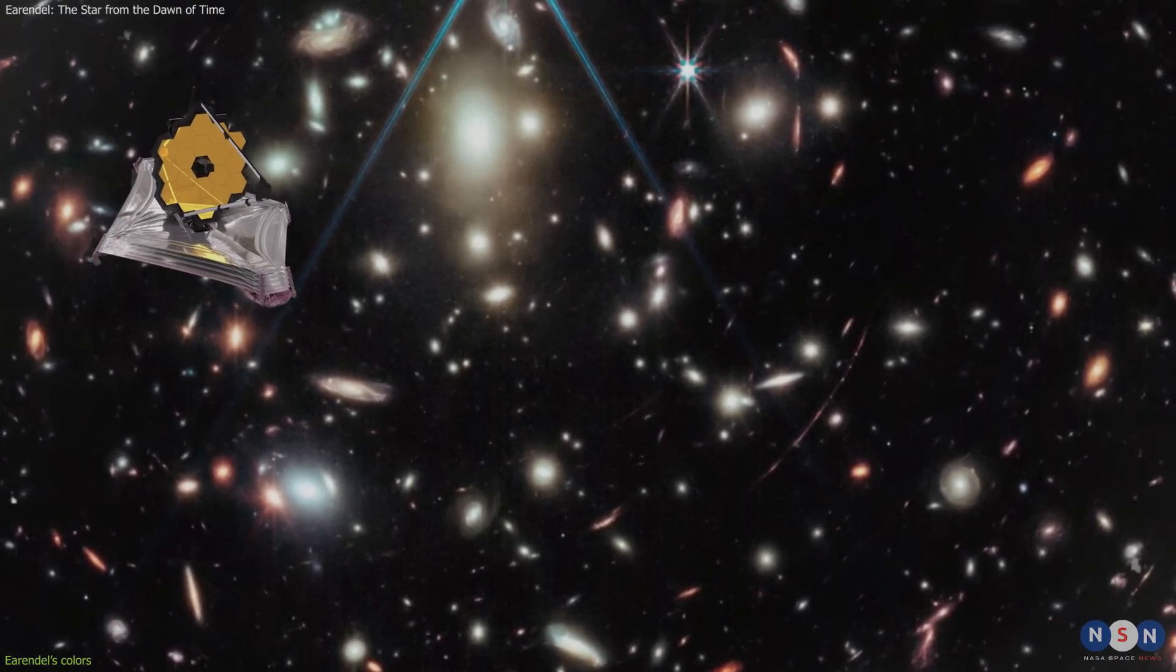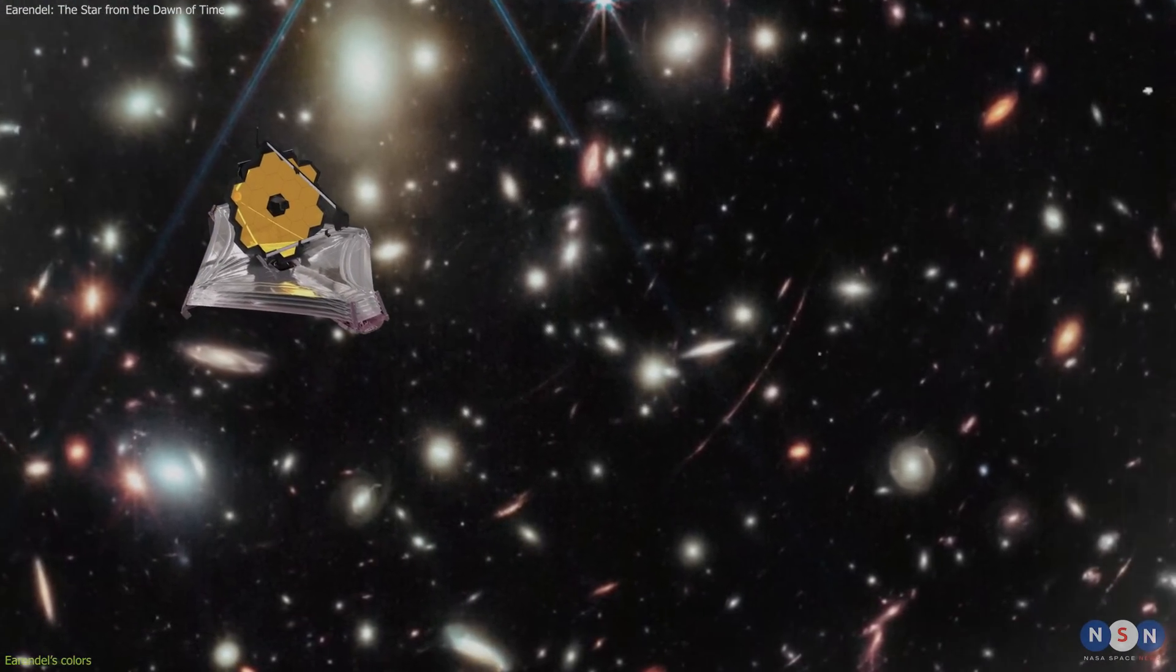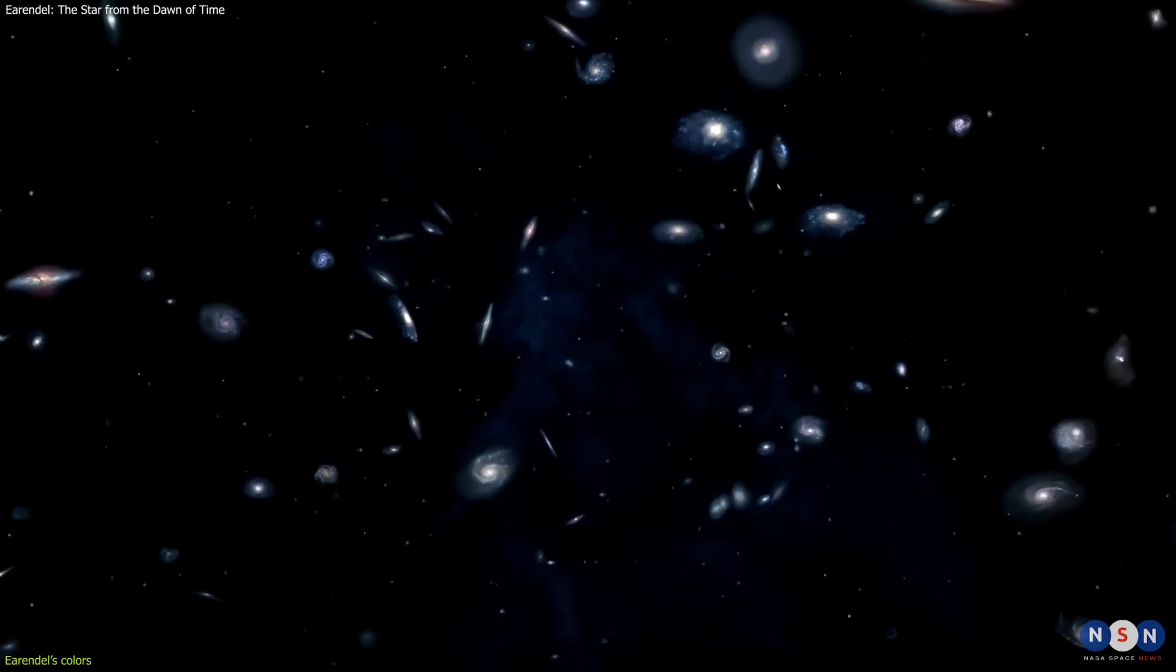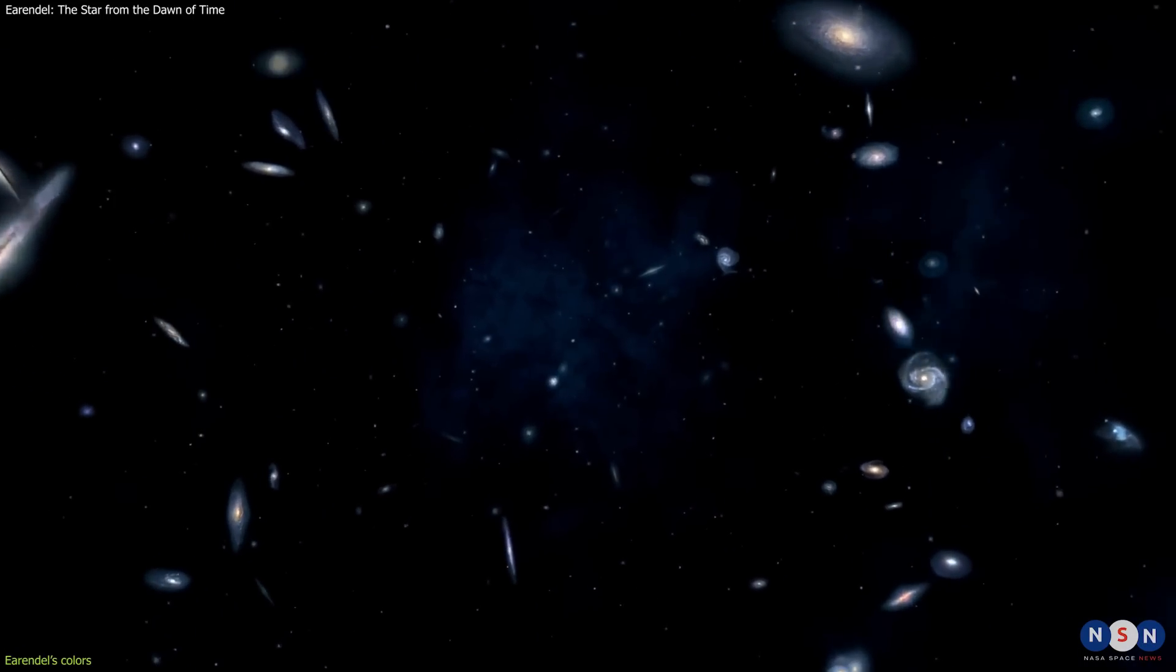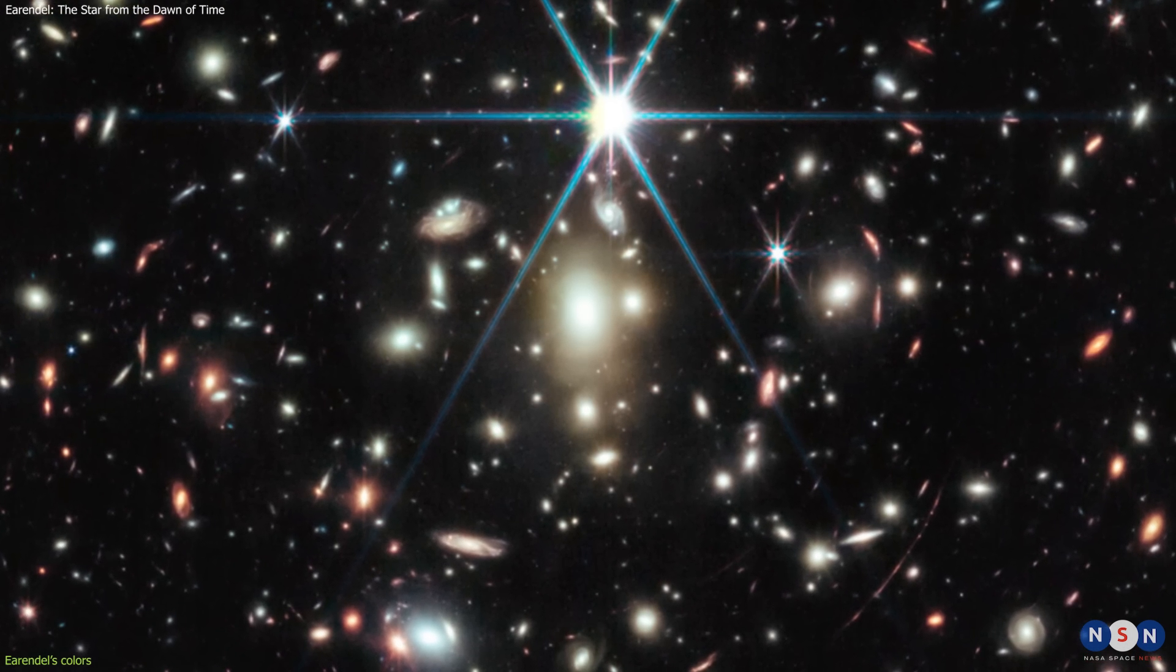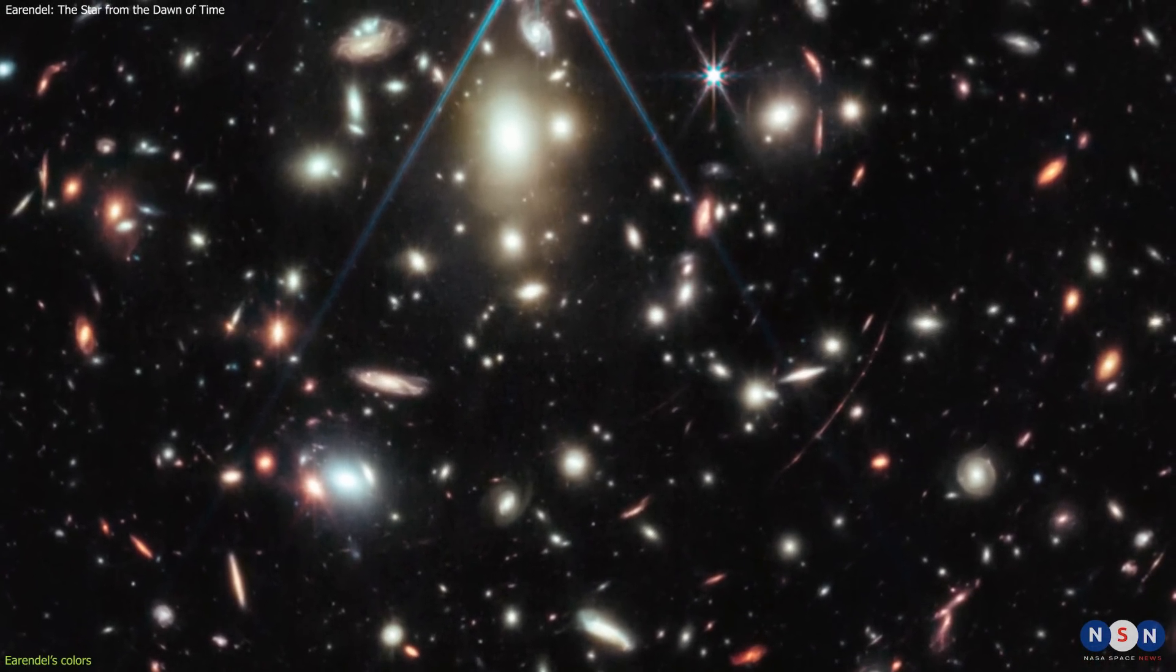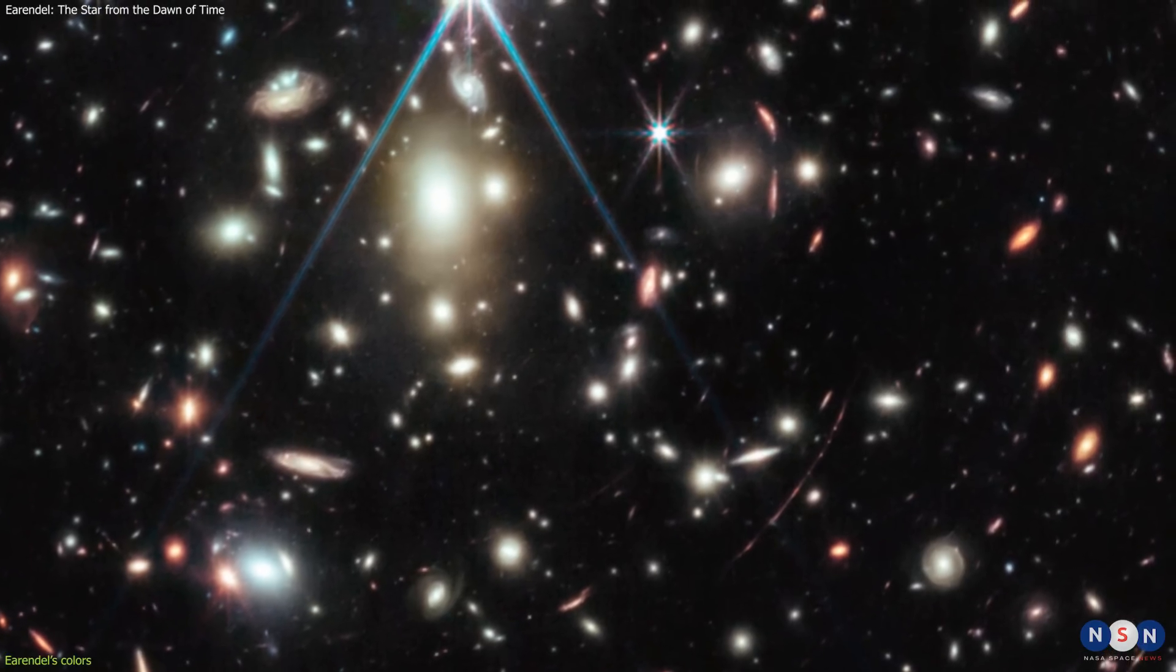In this case, Webb used a galaxy cluster called WHL-013708 as a gravitational lens to observe Earendel and other galaxies that are behind it. The galaxy cluster is located about 3 billion light-years away from us, and it contains hundreds of galaxies that are bound together by their gravity. The image from Webb's NIRCAM shows the galaxy cluster as a collection of yellow-white blobs in the center. Around the cluster, there are many distorted images of background galaxies that appear as blue arcs and streaks. These are called lensed arcs, and they are caused by the gravitational lensing effect.